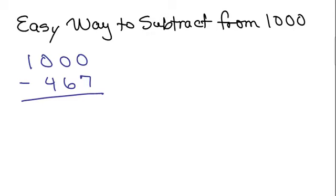A lot of people have trouble subtracting from 100 or 1,000 or 10,000, like a 1 or 5 or something with a bunch of zeros afterwards because of all the borrowing. So here's a slick and easy way to do it.